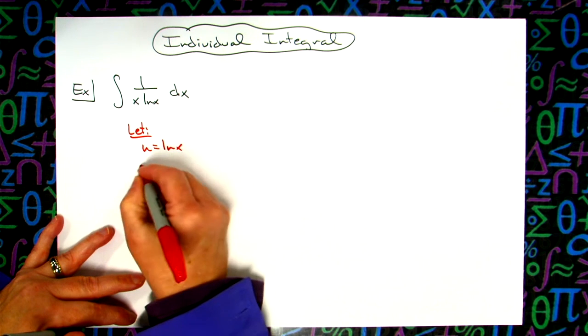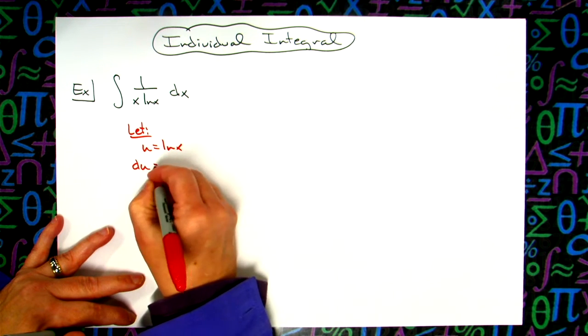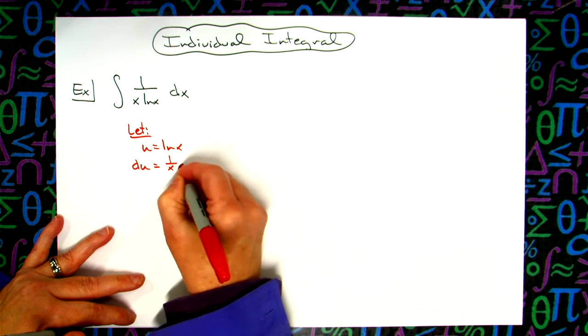Alright, when I then take the derivative of both sides, we'll have du is equal to 1 over x dx.